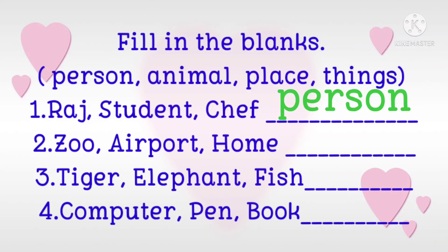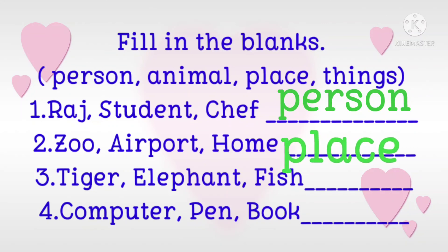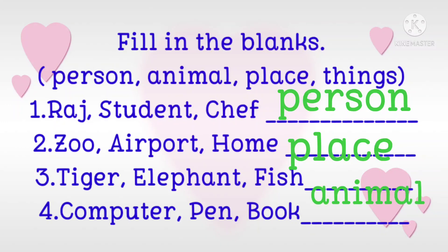Second one — zoo, airport, home. These represent places. And the third one — tiger, elephant and fish. These are animals. And the fourth one — computer, pen and book. These are name of things.